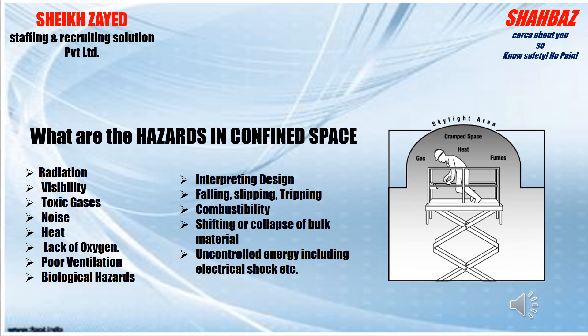Now that you understand confined space and its definition and examples, a question comes to mind: what are the hazards in confined space? Hazards include radiation, poor visibility, toxic gases, noise, heat, lack of oxygen, poor ventilation, biological hazards, design risks, falling, slipping, tripping, combustibility, shifting or collapse of bulk materials, and uncontrolled energy including electrical shock.